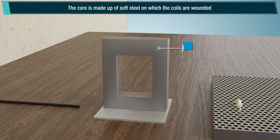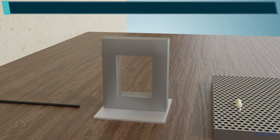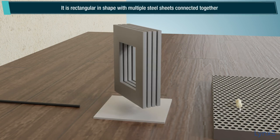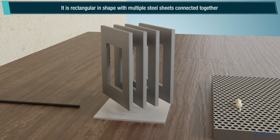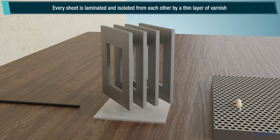The core is made up of soft steel on which the coils are wounded. It is rectangular in shape with multiple steel sheets connected together. Every sheet is laminated and isolated from each other by a thin layer of varnish.